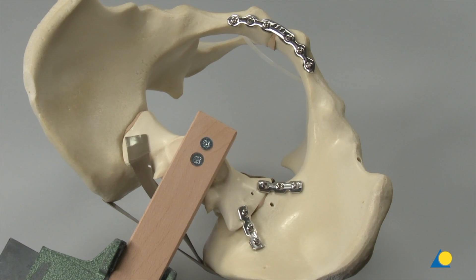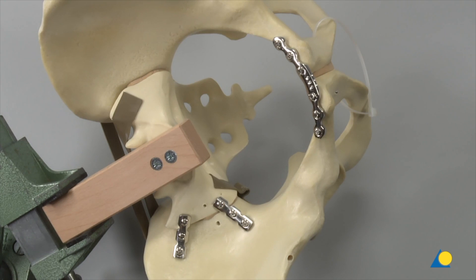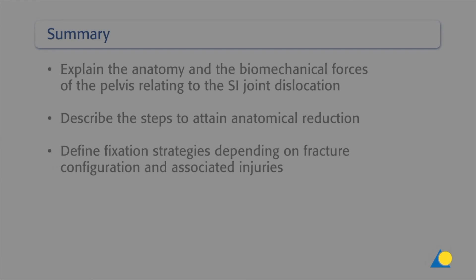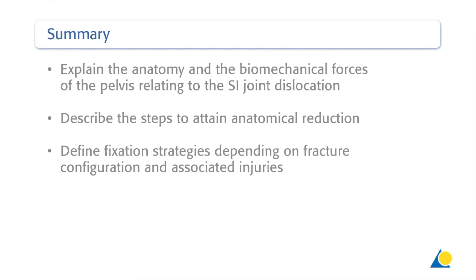Here is the final implant positioning and the correct reduction of this pelvic type C lesion. You should now be able to explain the anatomy and the biomechanical forces of the pelvis relating to SI joint dislocations, to describe the steps to attain anatomical reduction, and define fixation strategies depending on fracture configuration and associated injuries.